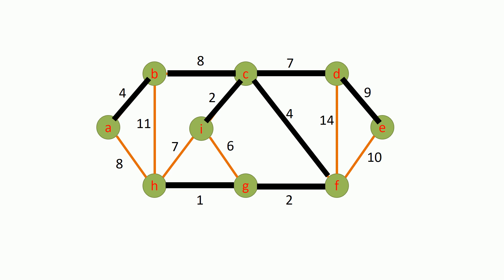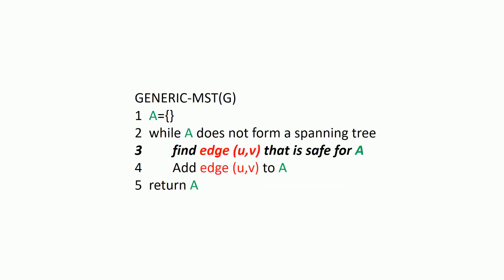Let's see the pseudocode to find the MST for a graph. Note that this is a generic or abstract pseudocode — in upcoming videos we will specialize it. In this pseudocode, A represents a set of edges which are going to be in our MST, or we can refer to A as a subset of the minimum spanning tree. Initially, set A is empty. We then find an edge which is safe for A and add it to A. This two-step process continues until our minimum spanning tree is complete.